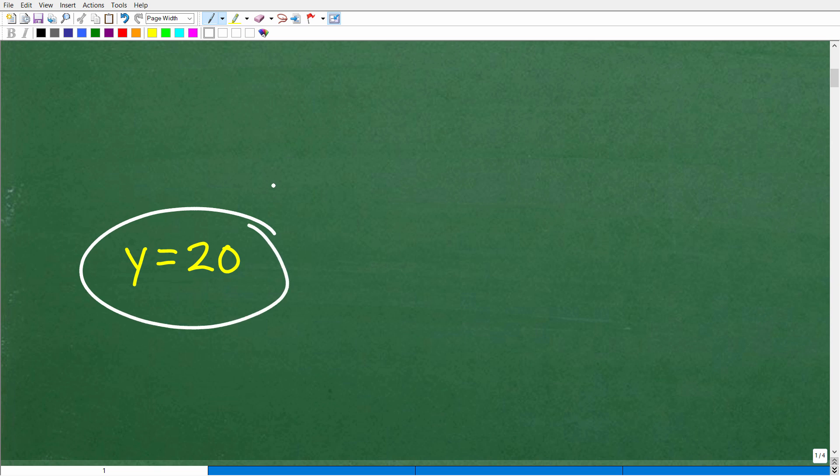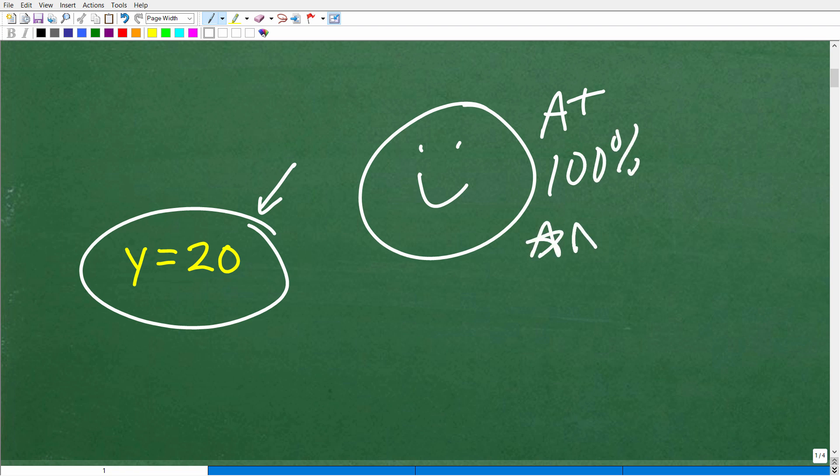All right, so that is the answer. So some of you out there might be confused. You may not even understand the question. Some of you maybe understood the question and got a different answer. But some of you understood the question and got this right. So for those of you that were able to ace this problem, a nice little happy face and A plus, a 100 percent, and a few stars.